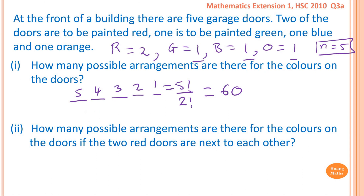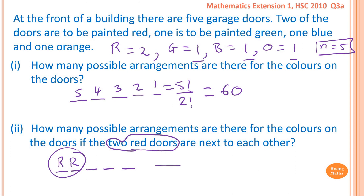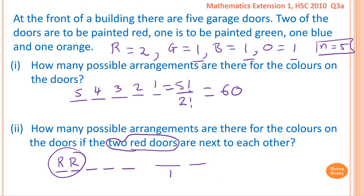How many possible arrangements are there for the colors on the doors if the two red doors must be next to each other? We tie the two red doors together as one unit, giving us one, two, three, four — four positions to place them, so four choices for the red unit. The other three colors each fill the remaining spaces: three choices, then two, then one. That gives four times three times two times one, which equals 24. Since both doors in the red unit are the same color, flipping them makes no difference, so we do not multiply by two. The answer is 24.